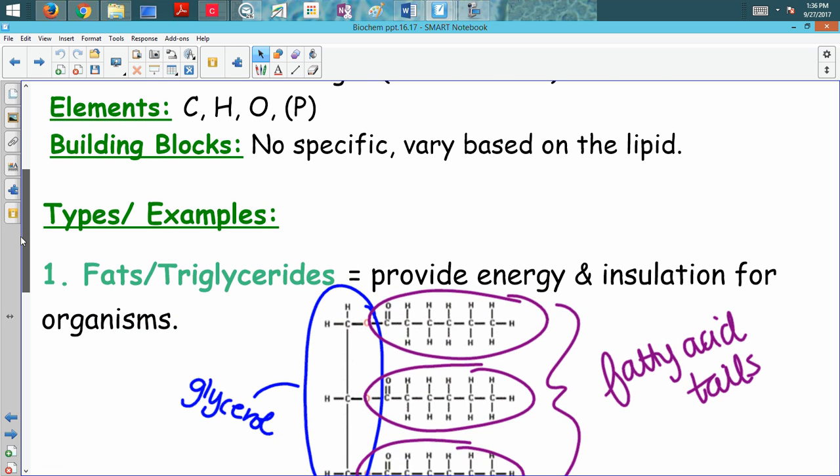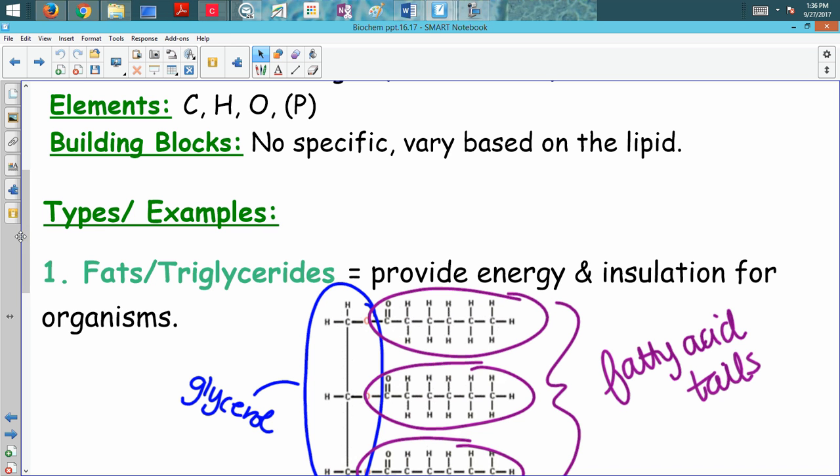The building blocks, which we would also call monomers, we're going to put no specific ones here. That's because, remember, lipids are not considered polymers because they have varying types of building blocks.